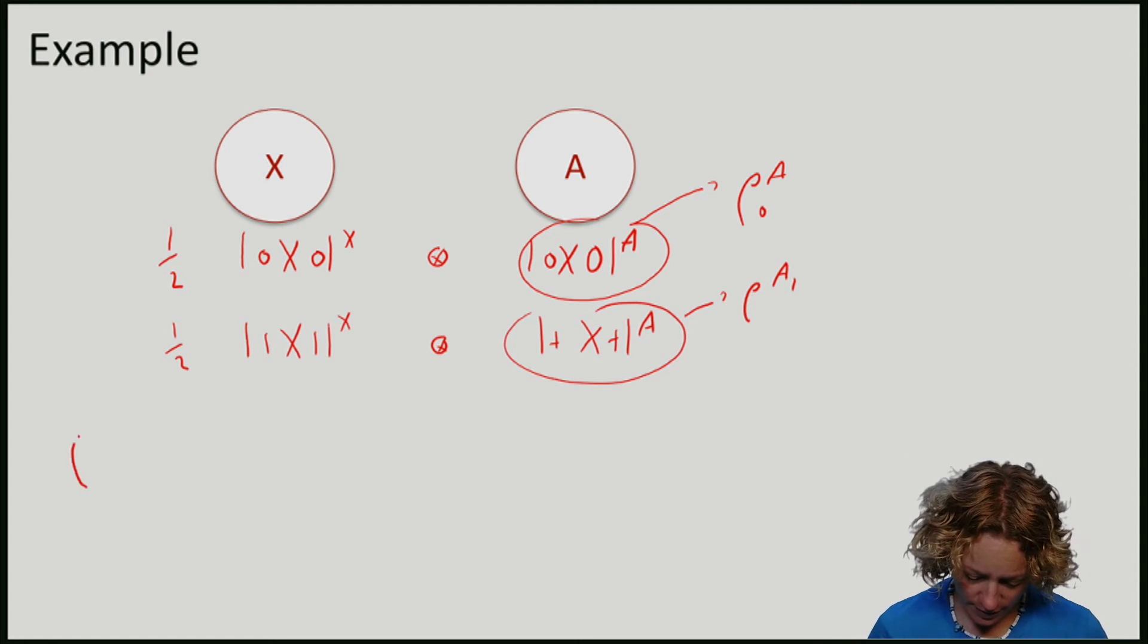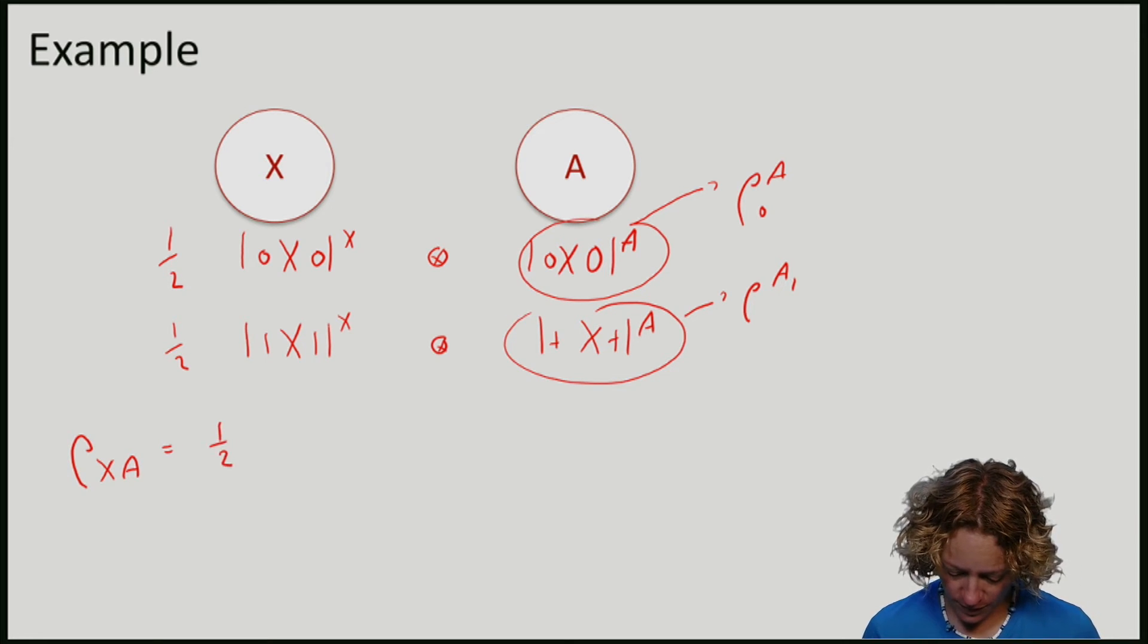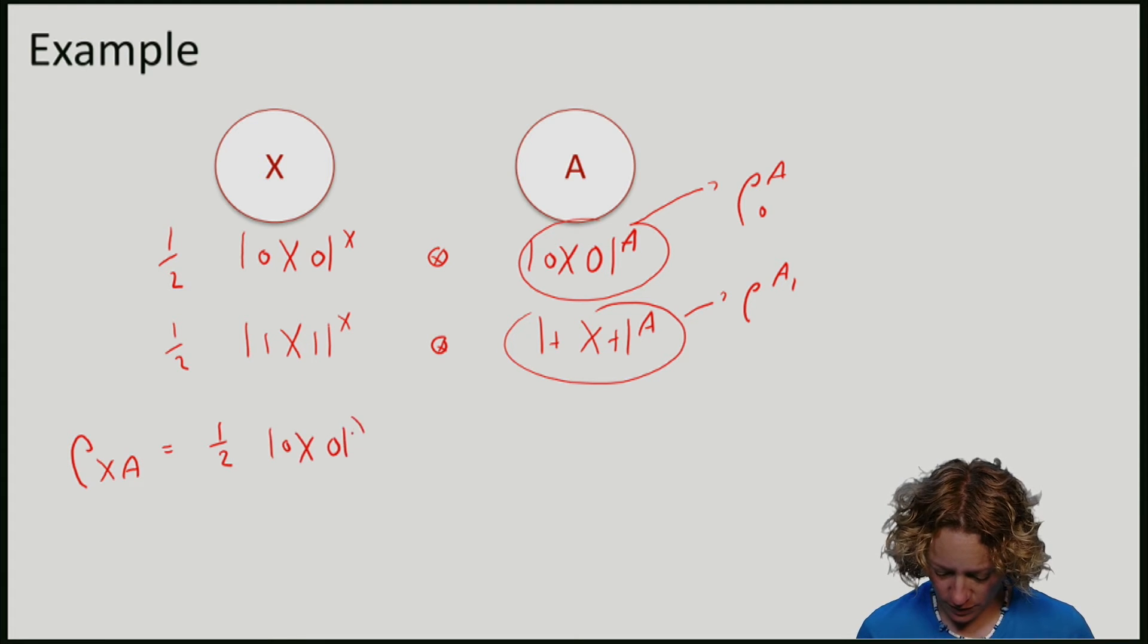So this here is rho A 0 and this here is rho A 1. So what I get if I average these two things, I get the global state rho X A to be half times 0, 0, 0, 0 on A